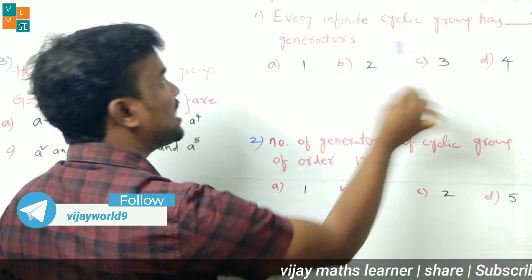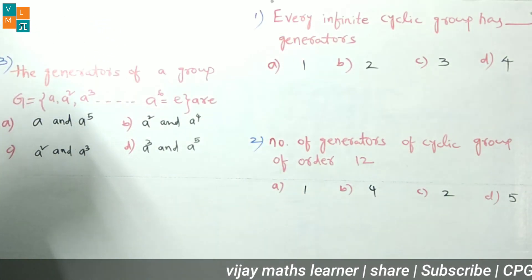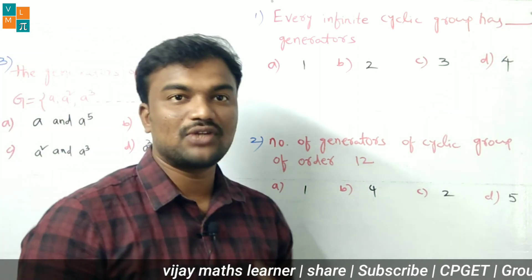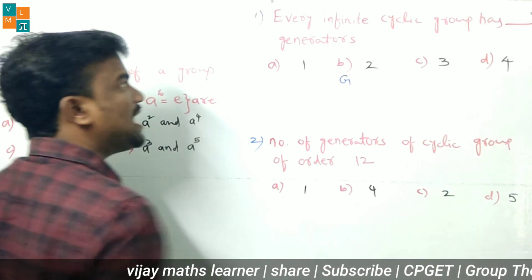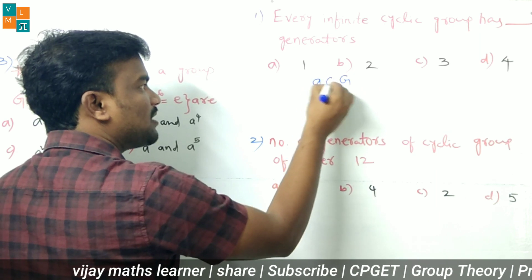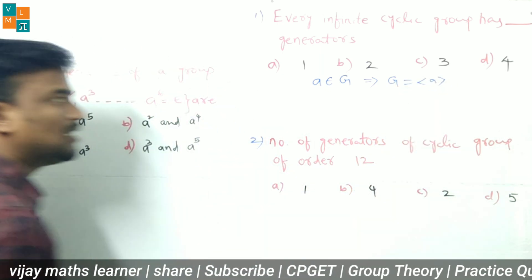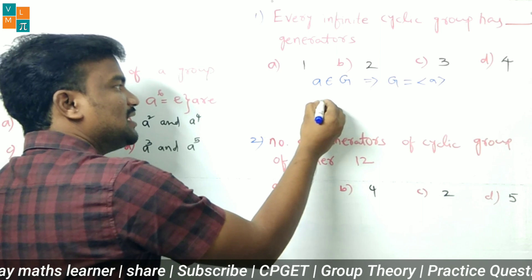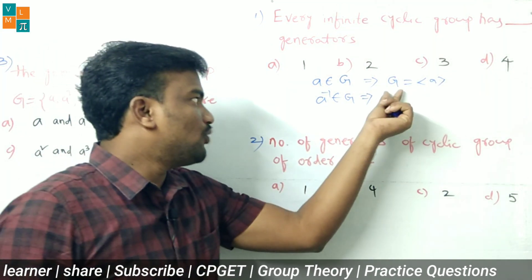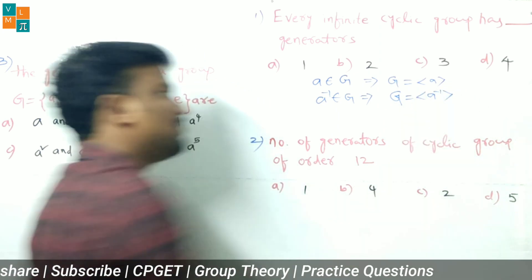The first question: every infinite cyclic group has how many generators? We need to find the number of generators of an infinite cyclic group. Here G is an infinite cyclic group, so it is generated by some element. If a belongs to G, then the cyclic group is generated by a. The inverse of a also belongs to G, and if G is generated by a, then G is also generated by a inverse.